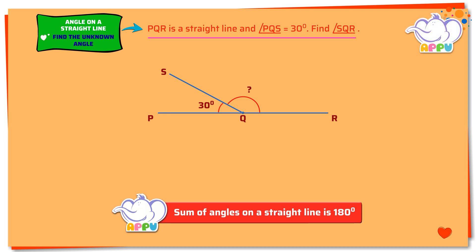Here angle PQS and angle SQR are the angles on the straight line PQR. Since the sum of angles on a straight line is always equal to 180 degrees, we write angle PQS plus angle SQR equals 180 degrees.